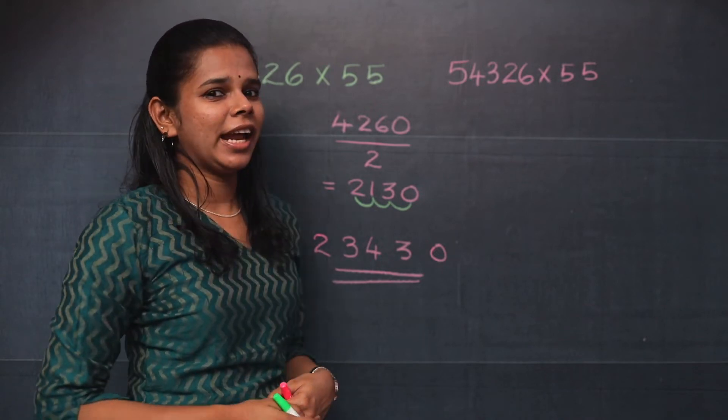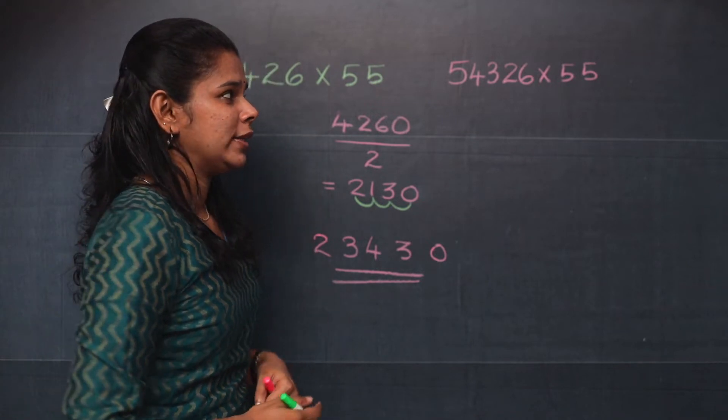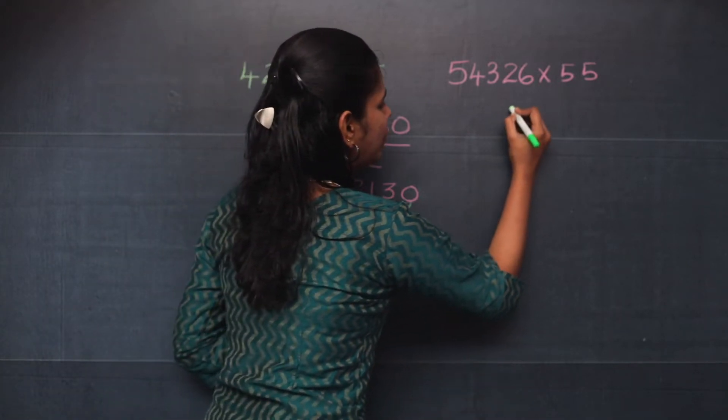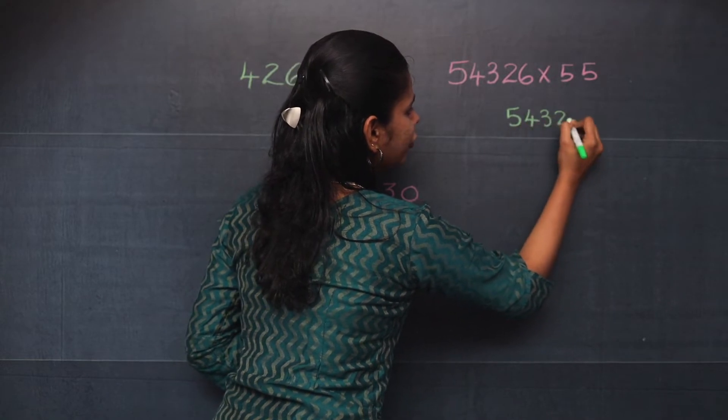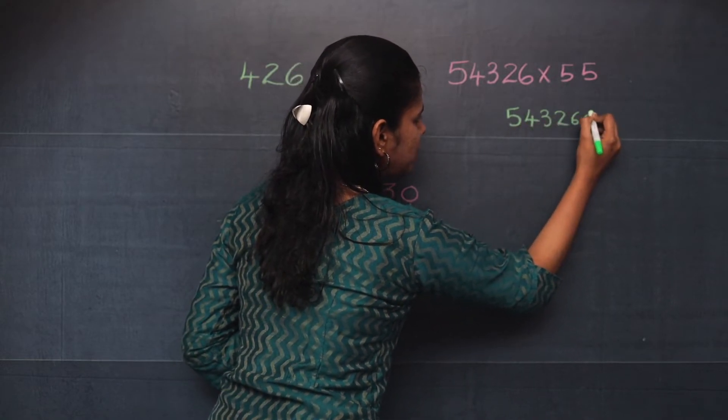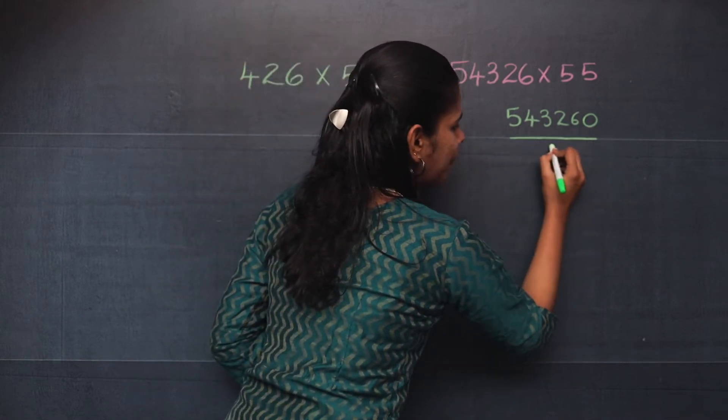54,326 multiplied by 55. So the first step is you will put 0 towards the end of the number. So it becomes this. Now you will divide this number by 2.